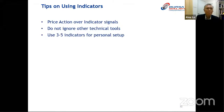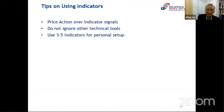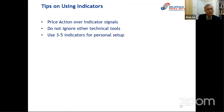Tips on using indicators: first, price action must be given precedence over indicators, because indicators are a derivative of price data and should not override what the price chart clearly shows — such as a broken trend line. Second, do not ignore other technical tools like patterns; a descending triangle showing a bearish structure should not be overruled by an indicator giving a bullish signal. Third, use a limited amount of indicators — three to five is sufficient.